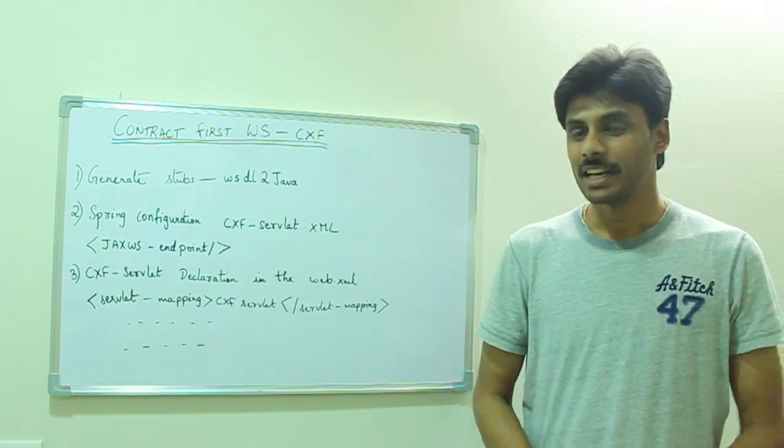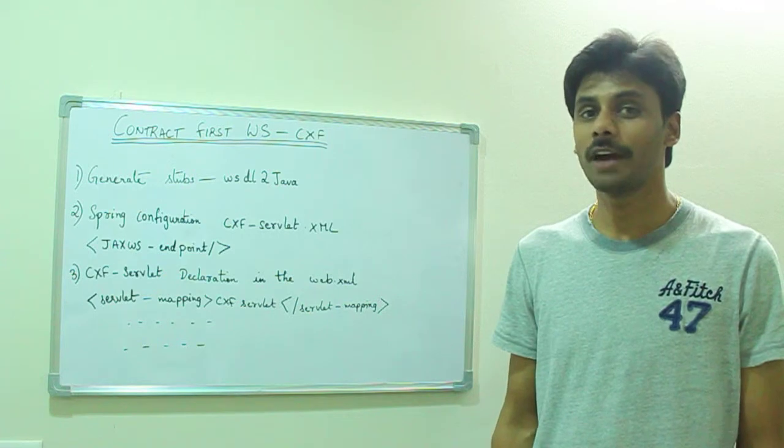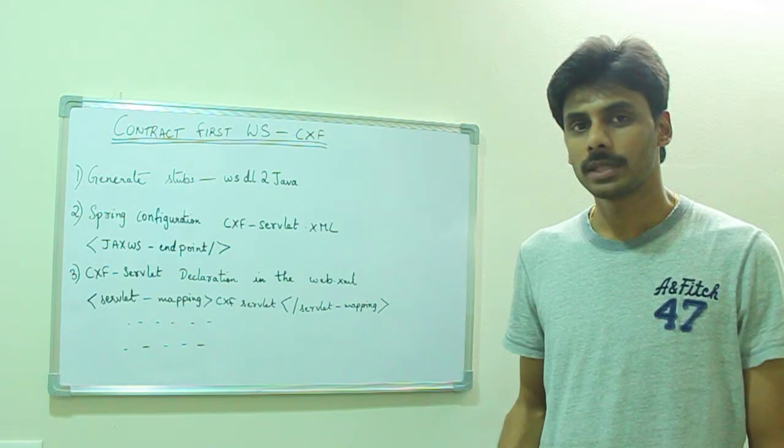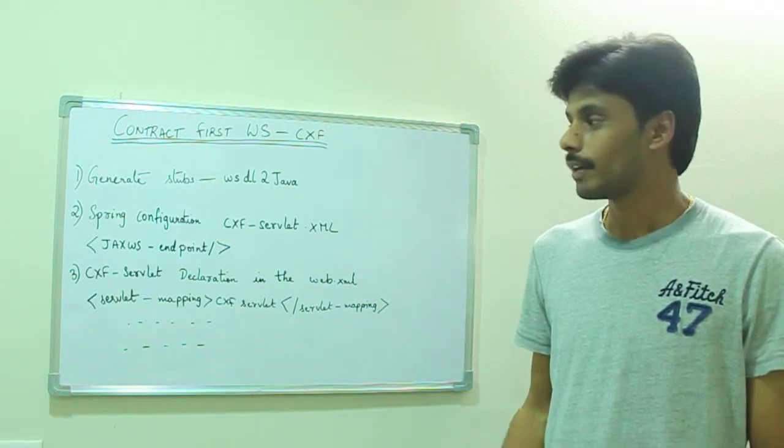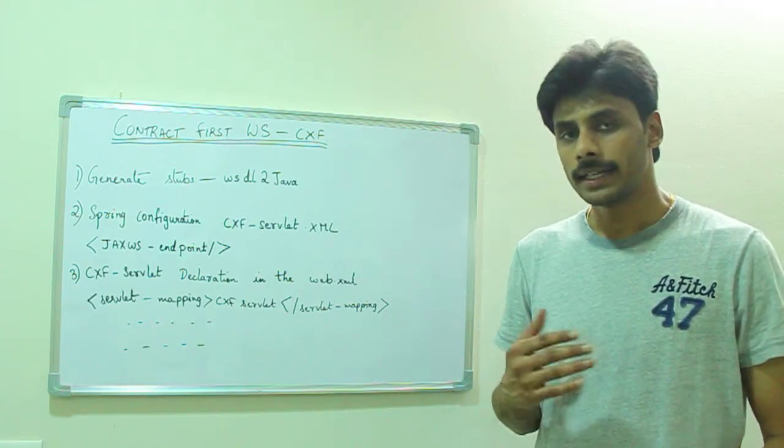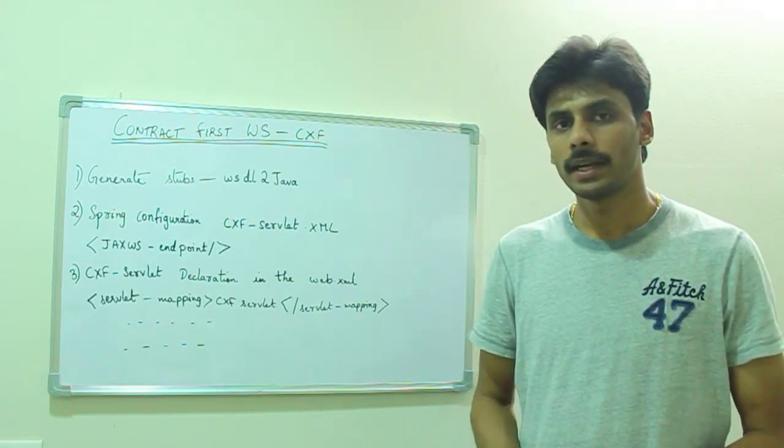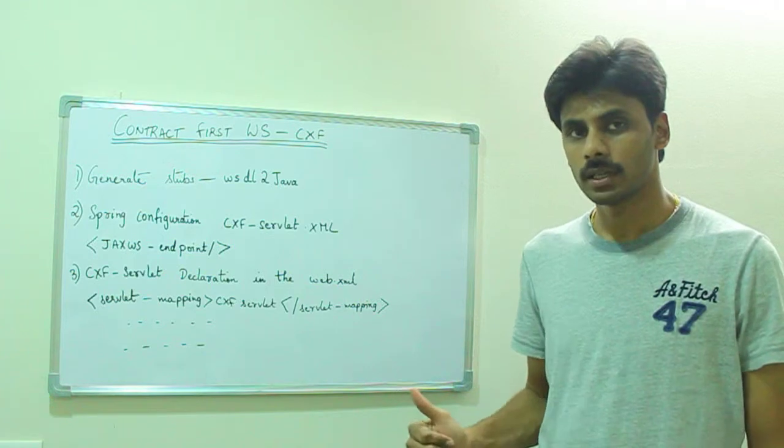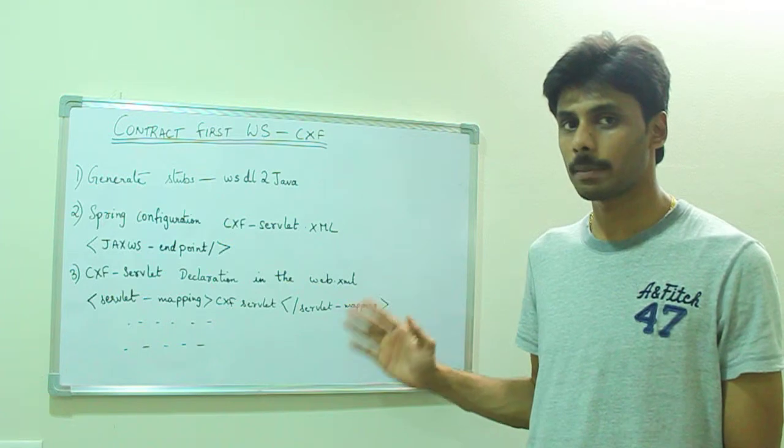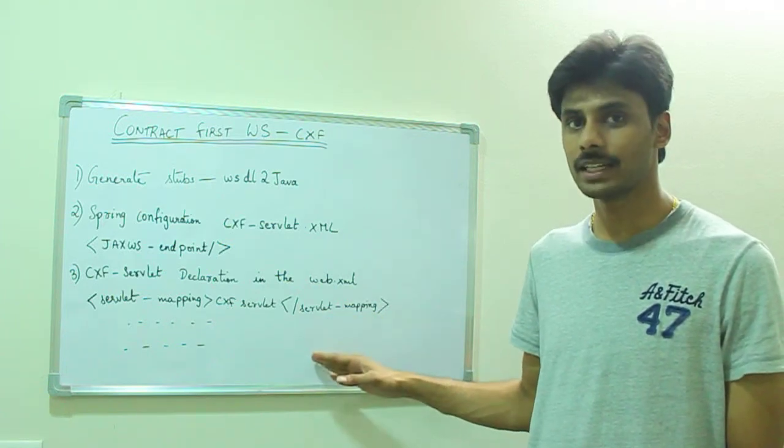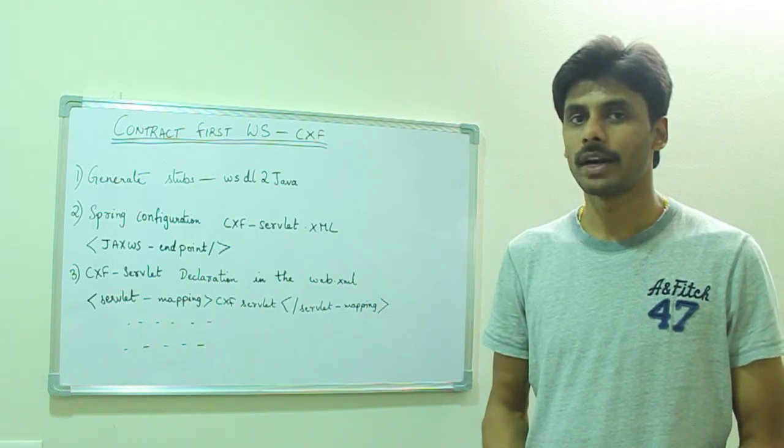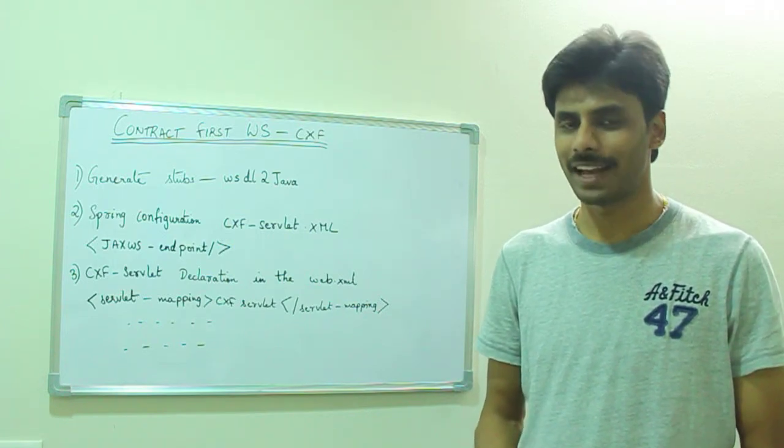It's that easy. To summarize, from this presentation, you have learned the three important steps that are required to come up with a contract-first web service using Apache CXF. The first step is to come up with a WSDL file and generate the Stubs and then implement our Web Services implementation by implementing one of these Stubs. The second step is to declare this endpoint in the CXF-Servlet.xml file which will later be used by the CXF-Servlet. The third step is to declare the CXF-Servlet in our deployment descriptor or the Web.xml file.